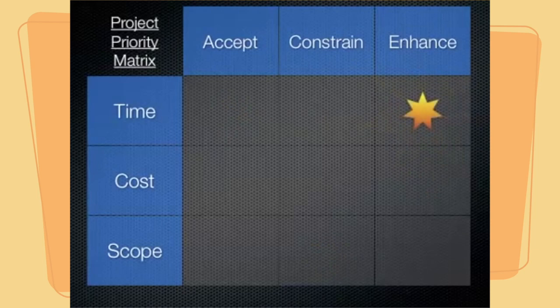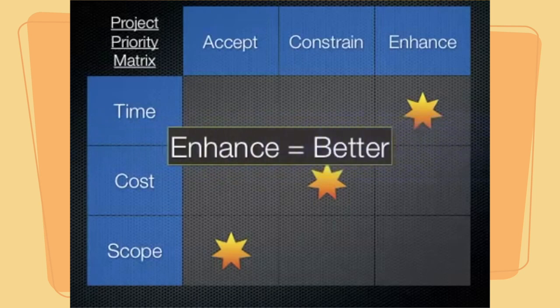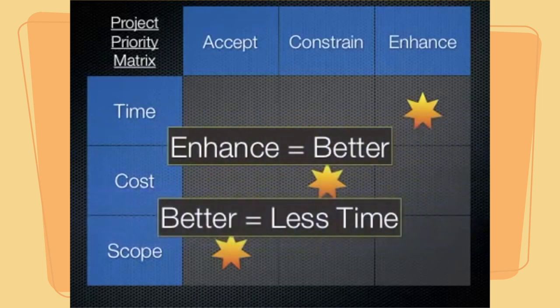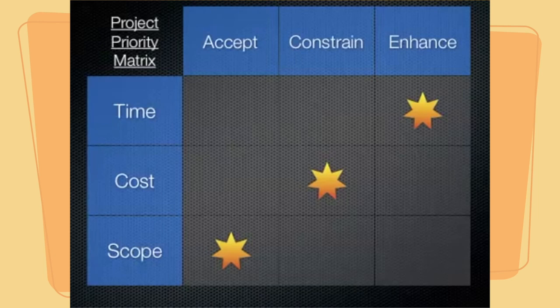Let's look at one other example where we are going to enhance time, constrain costs, and accept changes in scope. We use the word enhance to mean make something better, so a project has enhanced time if it is done in less time. In this particular example, we are constraining costs and are willing to accept changes in scope if it means we can actually get the project done a little bit earlier. Obviously, we will be communicating these trade-offs with our stakeholders throughout the project, but this is a very useful tool to establish up front the type of trade-offs we are willing to make as the project proceeds.